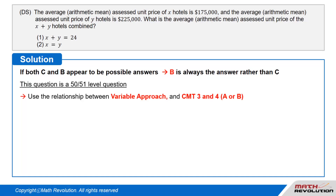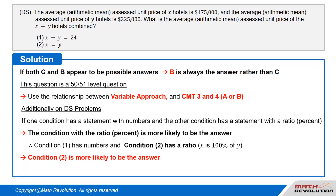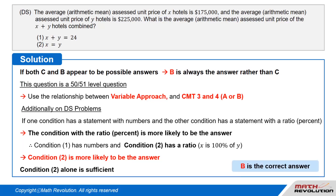This is a 50 to 51 level question that can be solved using the relationship between the variable approach and common mistake types 3 and 4, A or B. Additionally, on DS problems, if one condition has a statement with numbers and the other has a statement with a ratio or percent, the condition with the ratio or percent is more likely to be the answer. Since condition 1 has numbers and condition 2 has a ratio — X is 100% of Y — condition 2 is more likely to be the answer. Ratios are more likely to be the answer than numbers. Condition 2 alone is sufficient, so B is the correct answer.